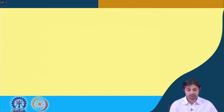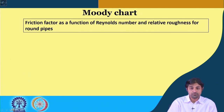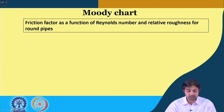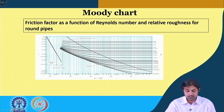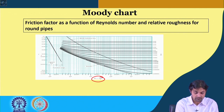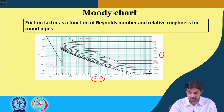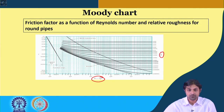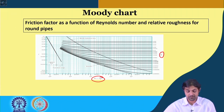To find the friction factor, there is something called a Moody chart. Friction factor is a function of Reynolds number and relative roughness for round pipes — it is a chart where Reynolds number is on the x-axis, F is read off the y-axis, and ε/D is plotted on the right. This is the oldest method of finding the Darcy friction factor.